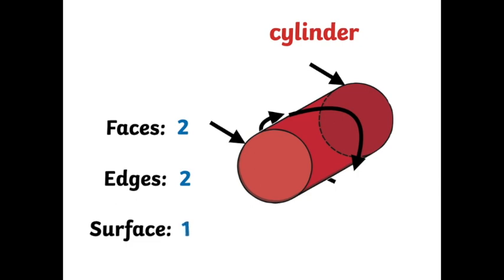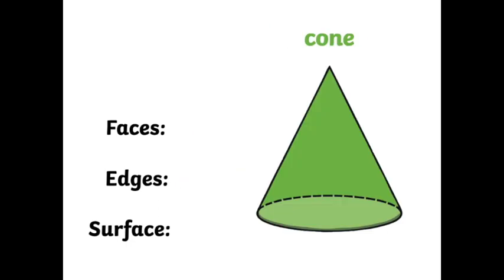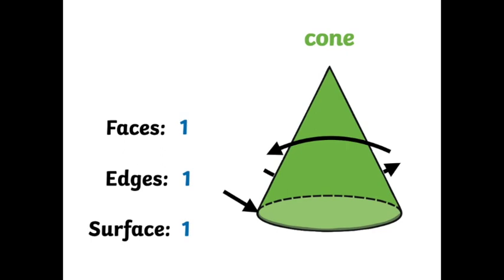Let's go to the next shape — a cone. How many faces does a cone have? Just one. 1. A cone has 1 face. How many edges does a cone have? Just one. A cone has one edge. What about surfaces? A cone has one curved surface. So when we're talking about a cone, we could say: a cone has one face, one edge, and one surface.